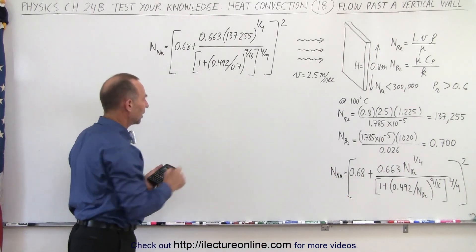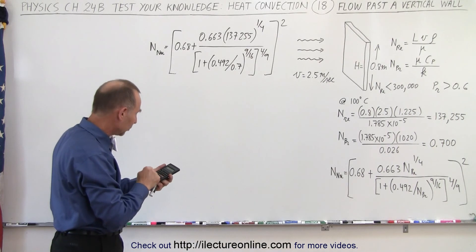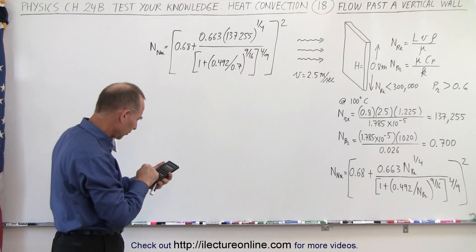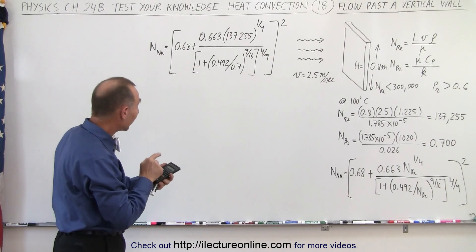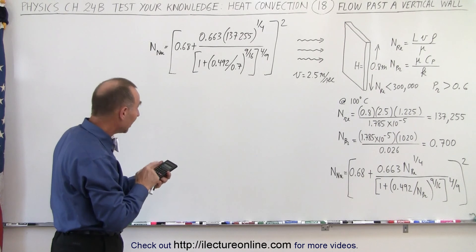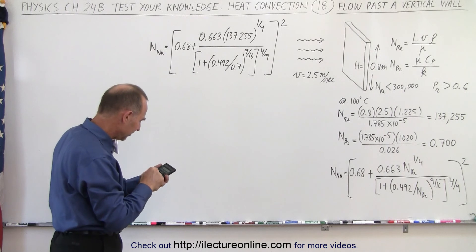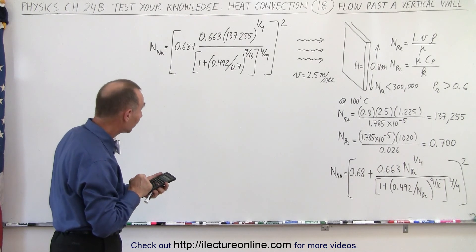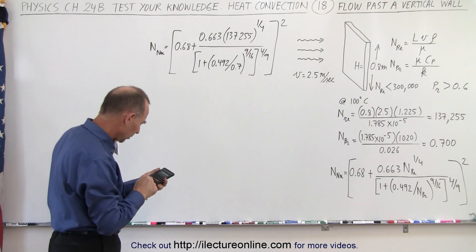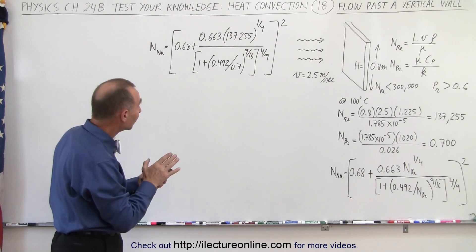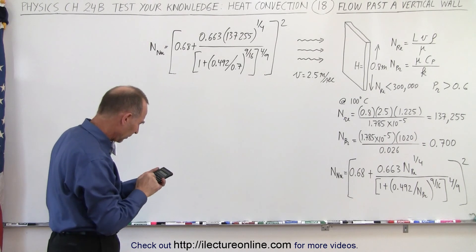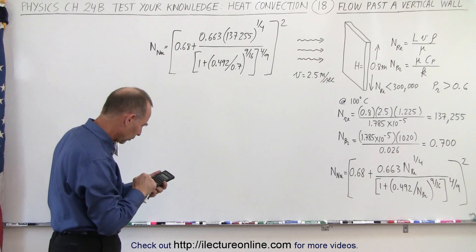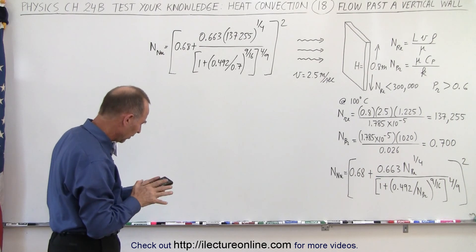Starting in the denominator we get 0.492 divided by 0.7, and then we're going to raise that to the 9/16th power, so 9 divided by 16. Then we add 1 plus 1 plus 1, and now raise that to the 4/9th power, 4 divided by 9, so we have 1.305 in the denominator.